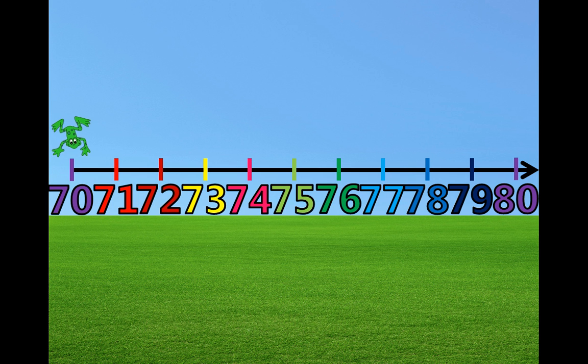This is Froggy the Frog. He likes to jump around on the number line. He is going to help us count from 70 to 80 on the number line. You can help him count too. When he jumps, you can say the number with us. Ready, Froggy?